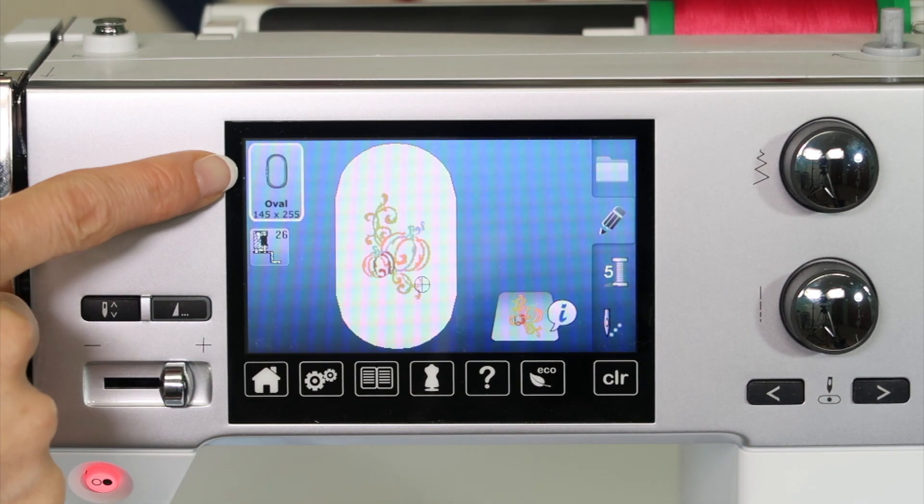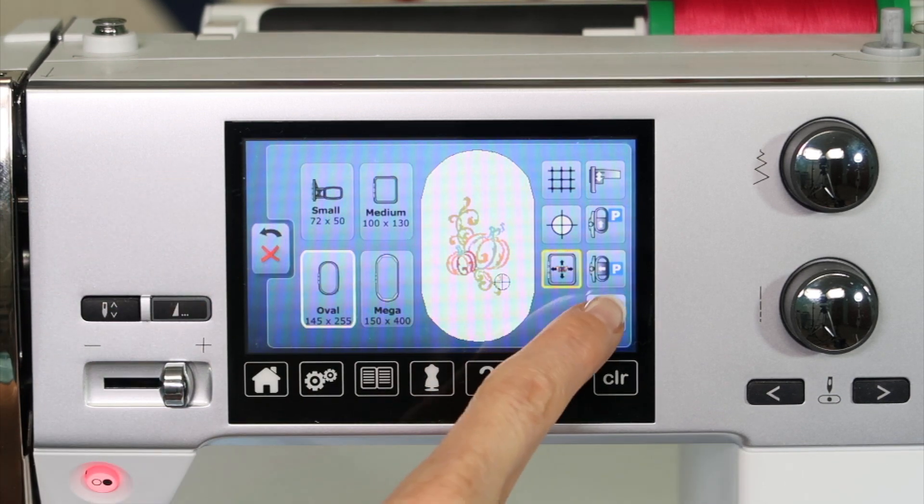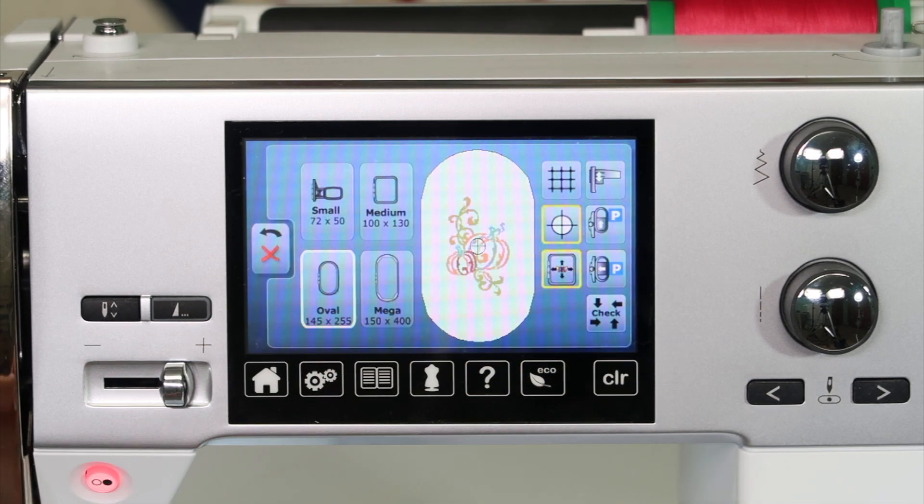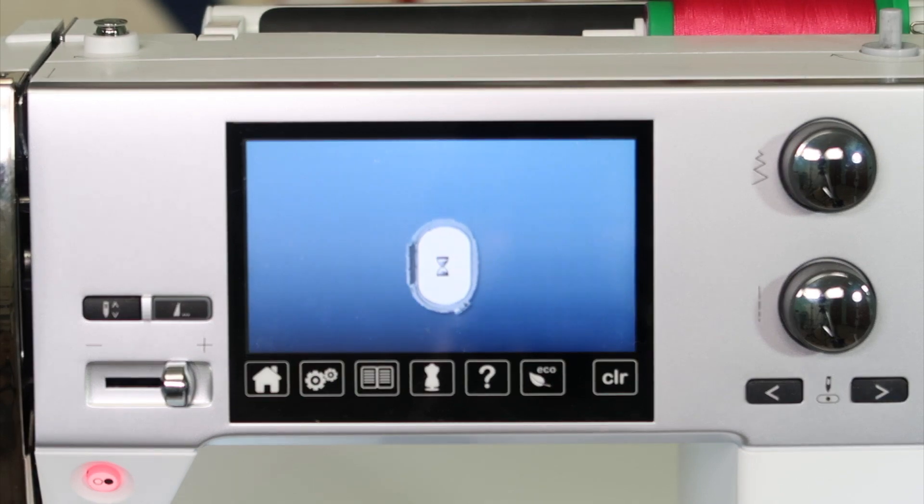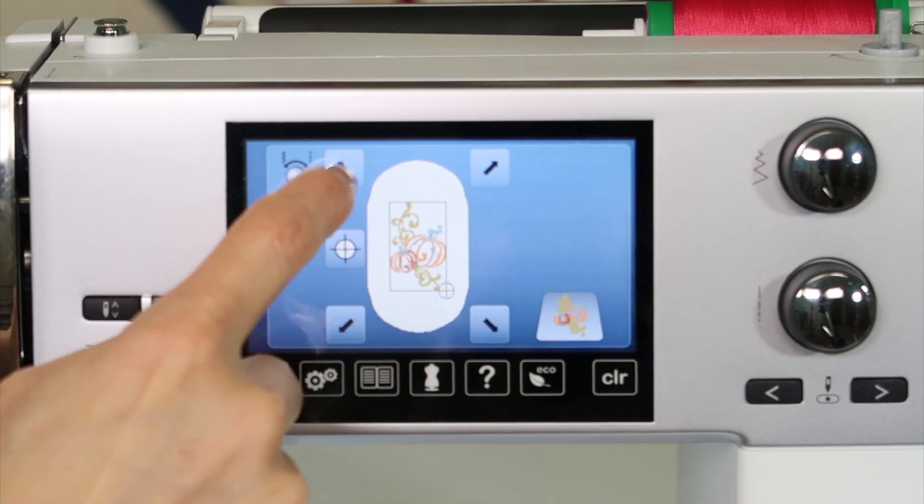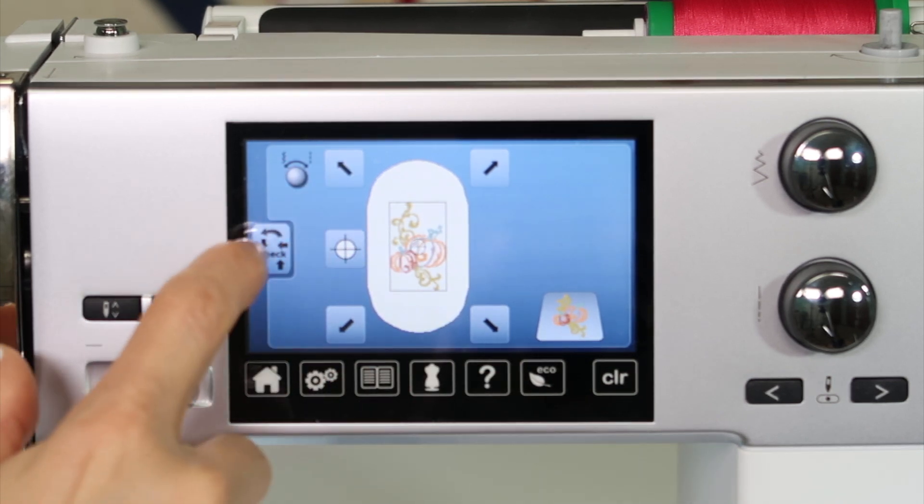We do have over here our hoops, so you can tell the machine which hoop you're actually using. Some of the things that we might use for moving the hoop, parking it, or finding even the center of our design. I'm checking to see where the design is going to stitch within the hoop, so I can actually go around all four corners and see where my design is going to stitch, and then back to maybe center there.